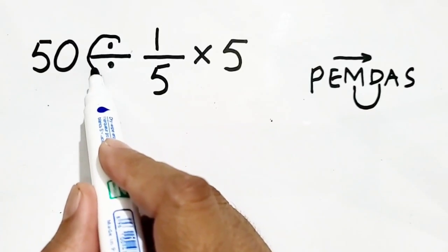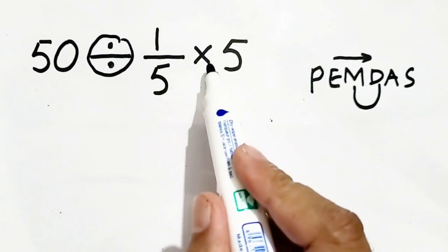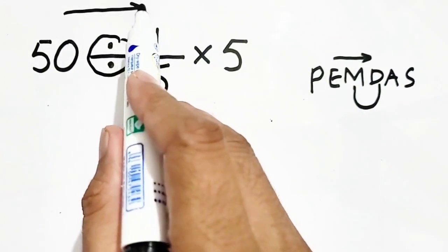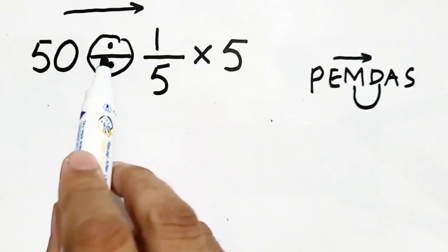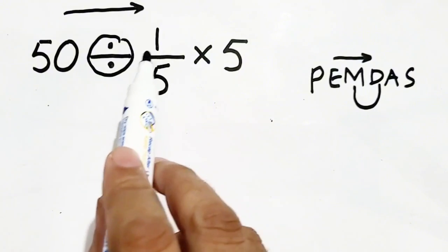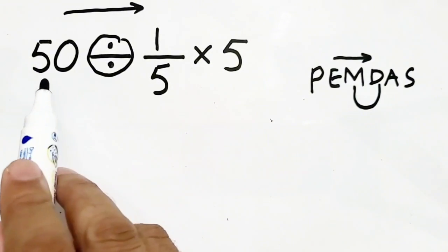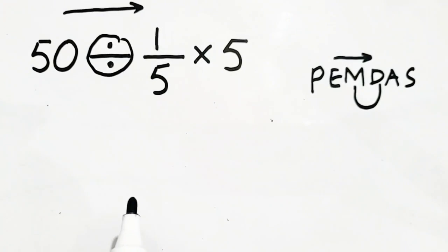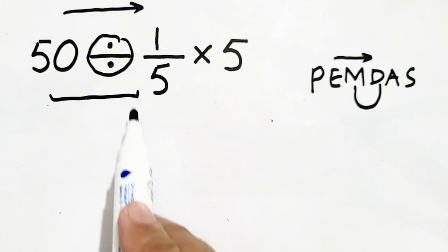Now if we see that division is at the left and multiplication is at the right, so we have to move from left to right. So first of all we have to divide 50 by 1/5. When we divide 50 by 1/5, we have to apply the KCF rule.